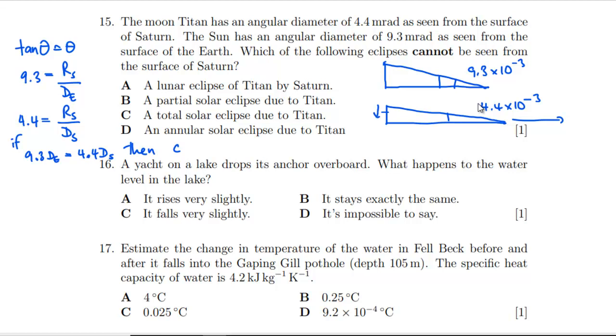We can't have this setup. This is much further away, so this is going to swamp the sun. Titan's going to completely block out the sun. We're not going to get an annular one. We're certainly not going to get that. We can do total, that's fine. Partial is fine, you just clip an edge of it. A lunar eclipse of Titan by Saturn doesn't say whether it's going to be partial or not, so you can always get Titan on the other side. So yeah, it is going to end up being D.